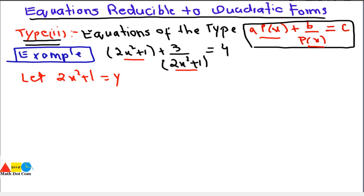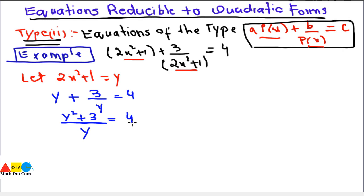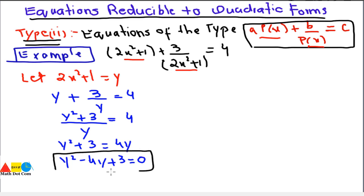We substitute this value into the equation to get y + 3/y = 4. Taking the LCM as y: y² + 3 = 4y, and then y² - 4y + 3 = 0. Now we have got an equation that is in the standard form of a quadratic equation.